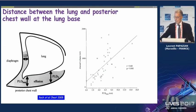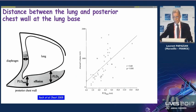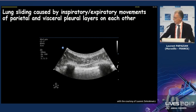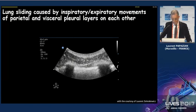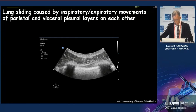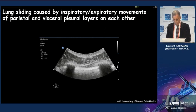Ultrasounds have been used for a long time to assess pleural effusion, to evaluate the volume of pleural effusion, and also to direct drainage and make it safer. Regarding lung parenchyma, in this video you can see a normal aspect with lung sliding related to the glissement of the two visceral layers on each other, and also A-lines related to artifacts due to the pleural layer.